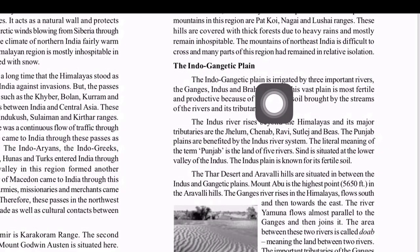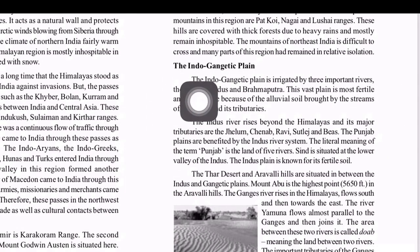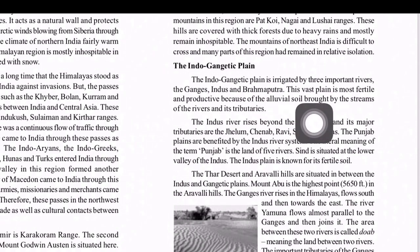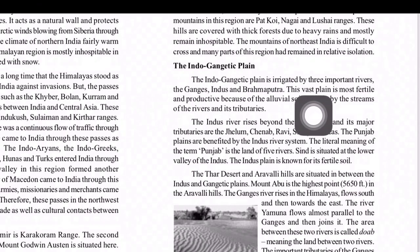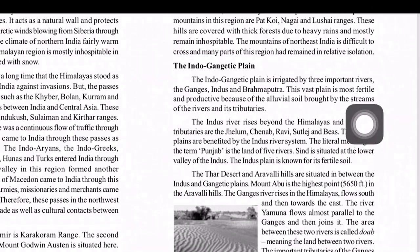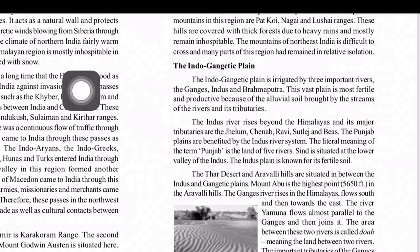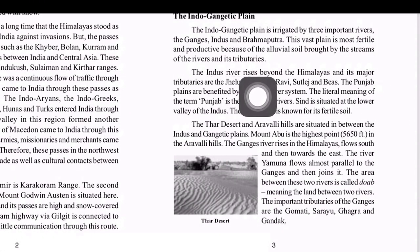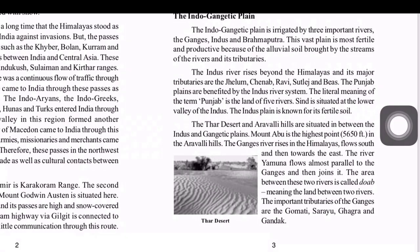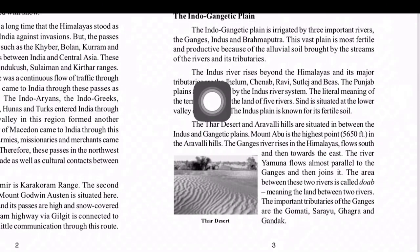The Indo-Gangetic Plain is irrigated by three important rivers: the Ganges, the Indus, and the Brahmaputra. This vast plain is most fertile and productive because of alluvial soil brought by streams of the rivers and their tributaries. The Indus River rises beyond the Himalayas, and its course extends into what is now Pakistan.